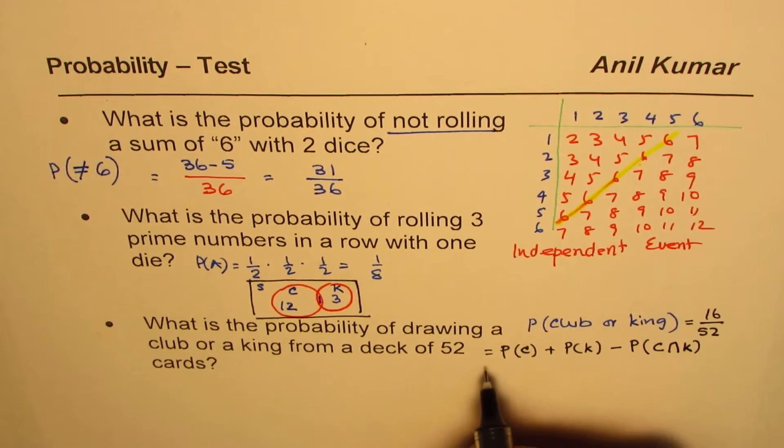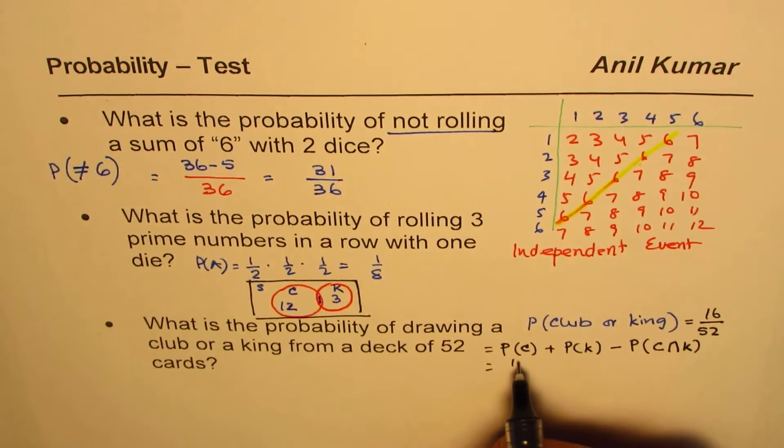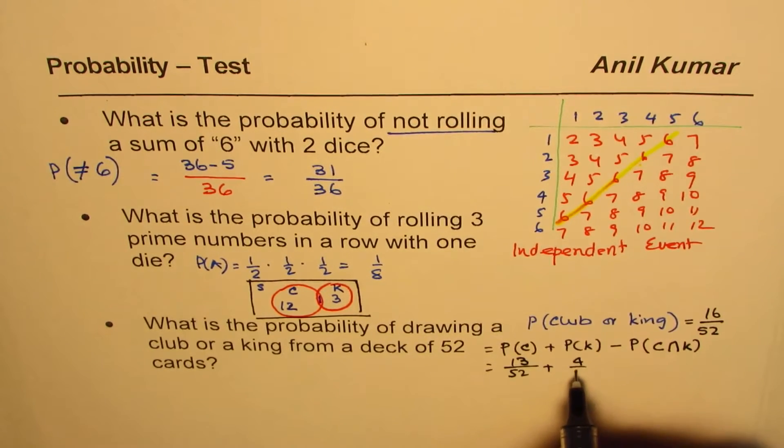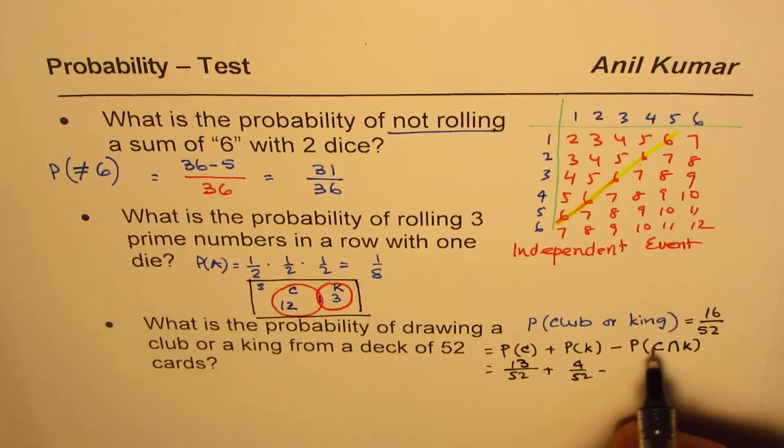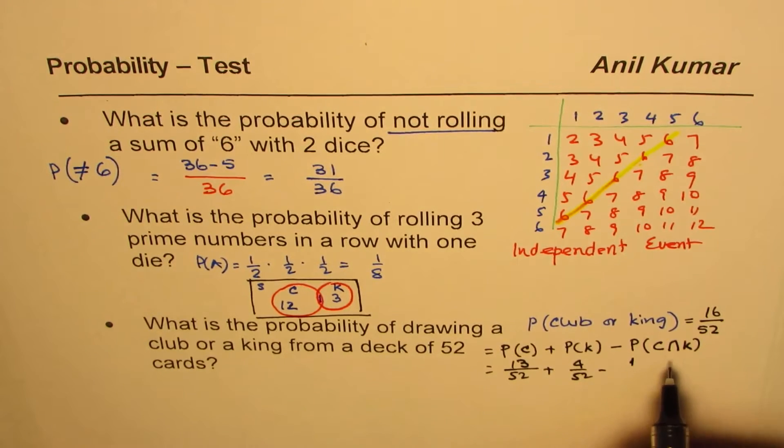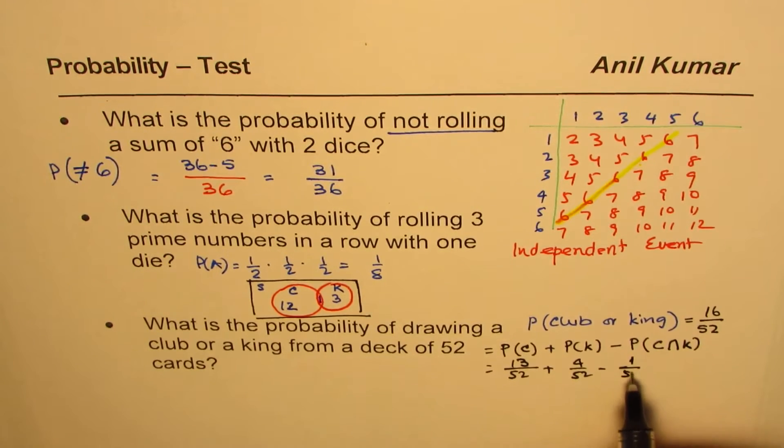That minus is because of this one, do you understand? So it should be, if I do the second method, it will be 13 over 52 plus 4 over 52 minus, this one is common, so minus 1 over 52.